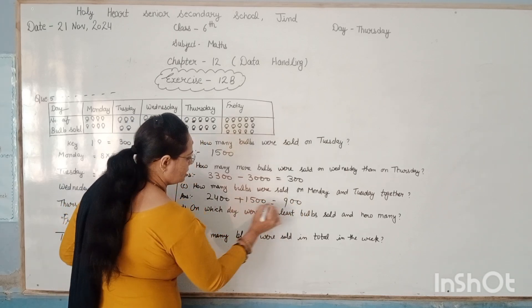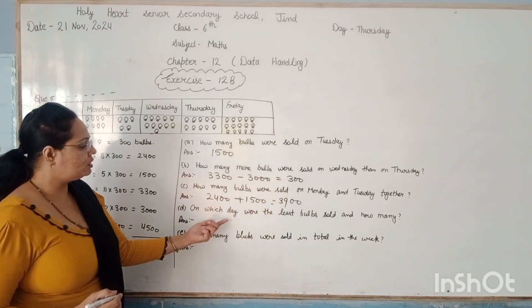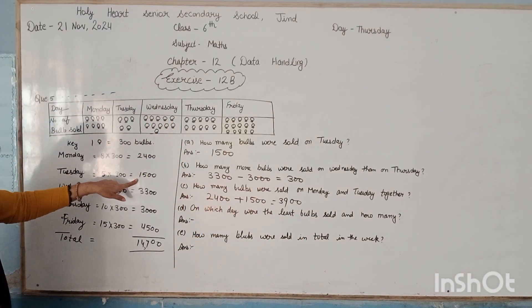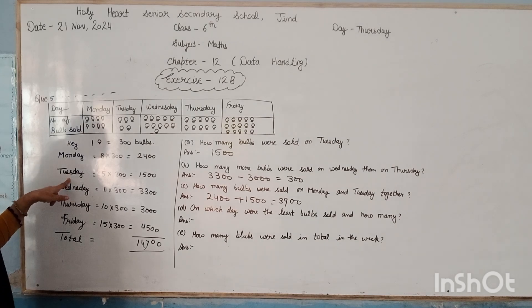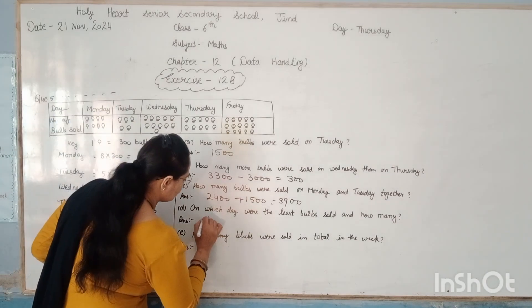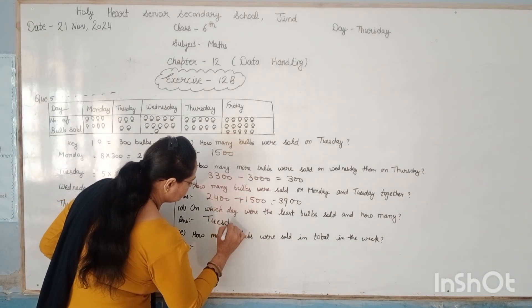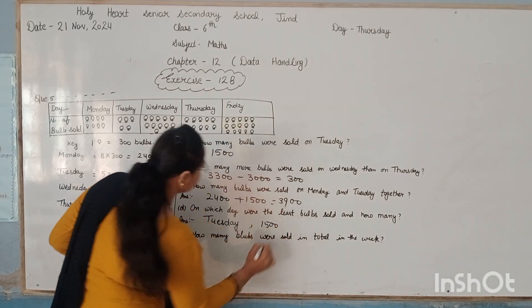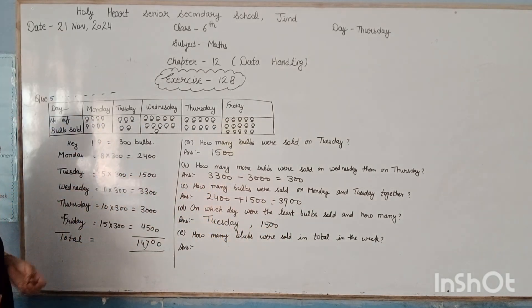On which day were the most bulbs sold? These bulbs are sold 4,500, and on which day? Friday. So here we have to write Friday, and how many? There are 4,500.